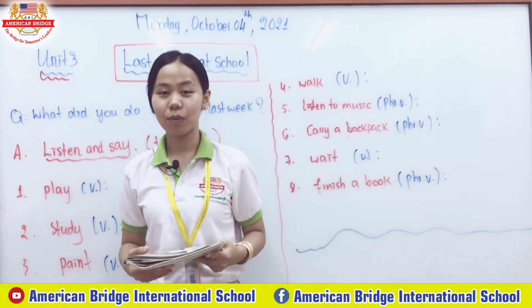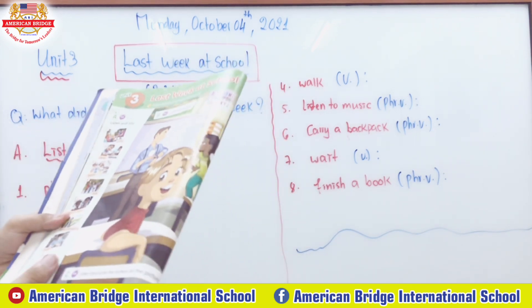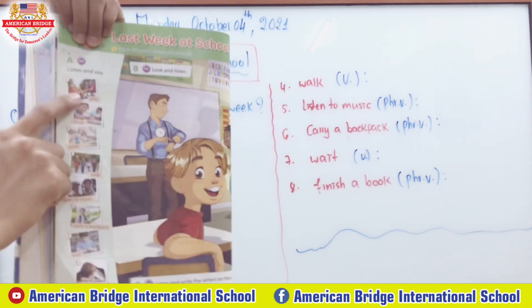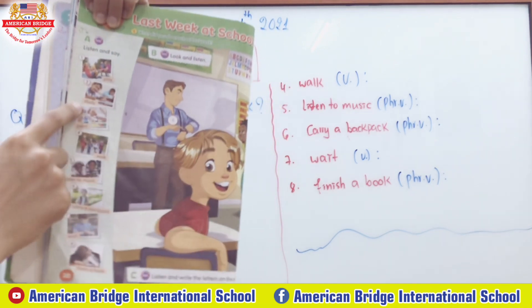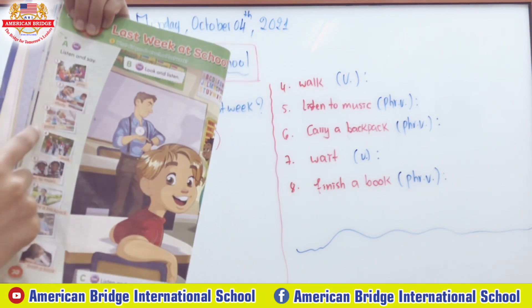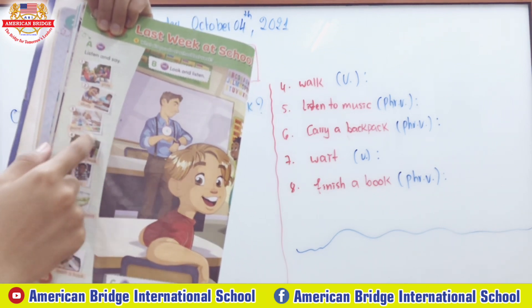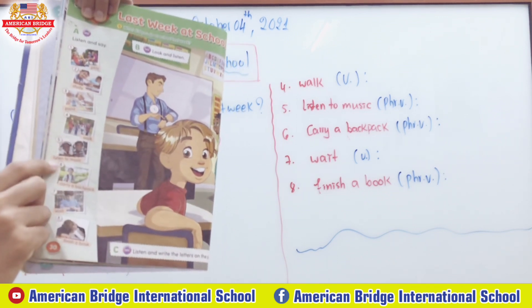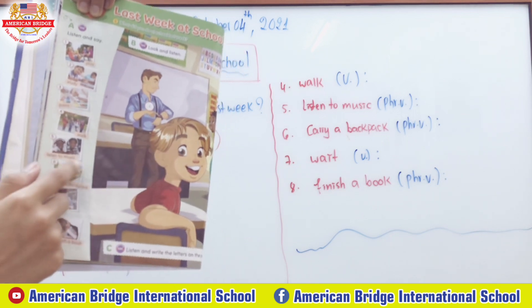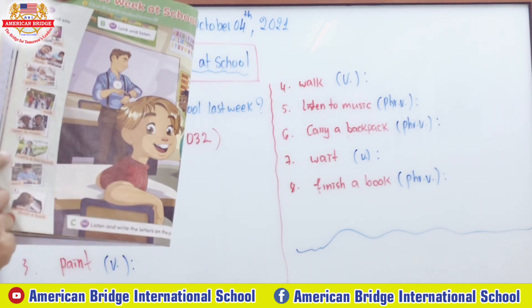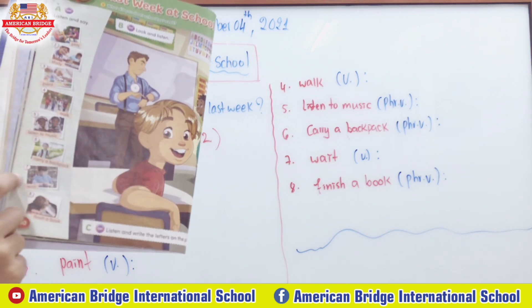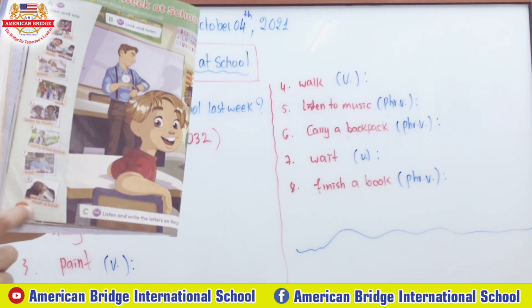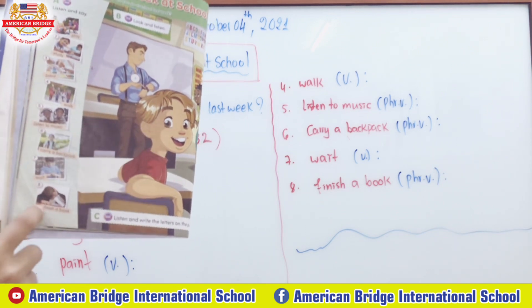Welcome back, everyone. I believe you already know how to pronounce each word. Number one: play. Number two: study. Number three: paint. Number four: walk. Number five: listen to music. Number six: carry a backpack. Number seven: wait. Number eight: finish a book.